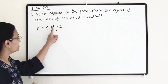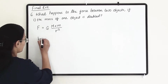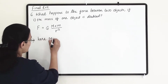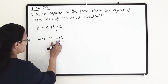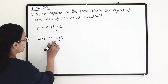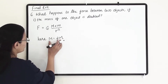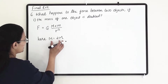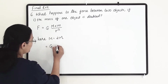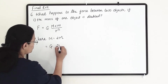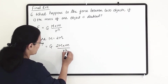We can make any one mass double. So here we are taking capital M equals to 2M. Let us put this value into the equation. We will get G times 2M times m, divided by r square.